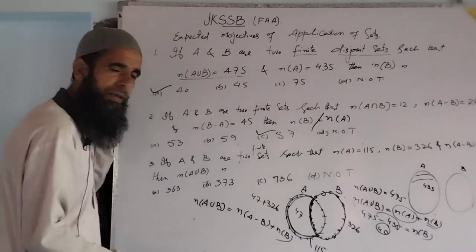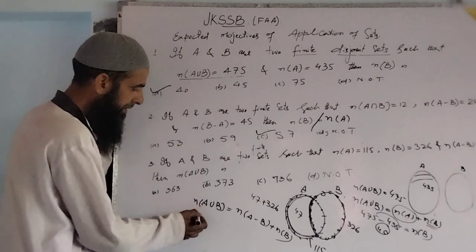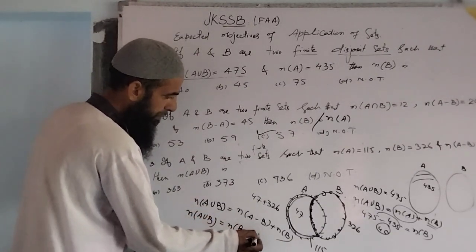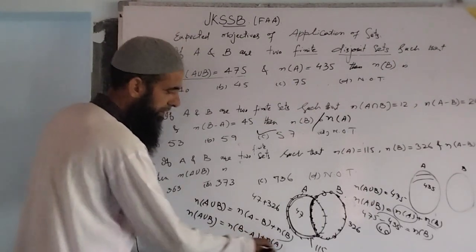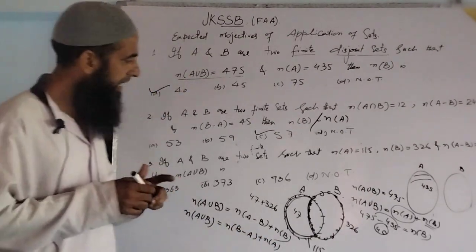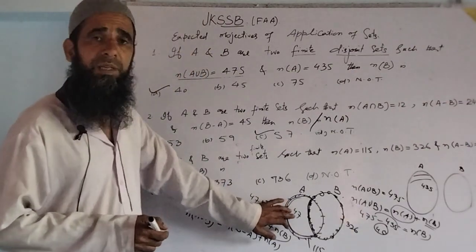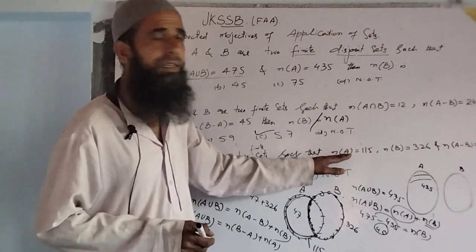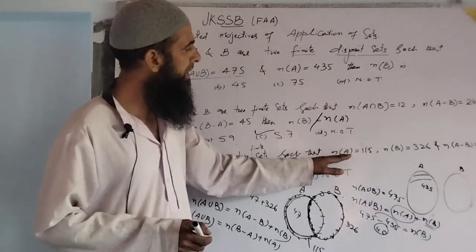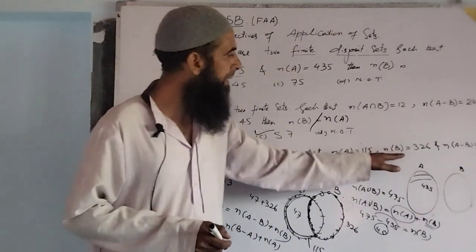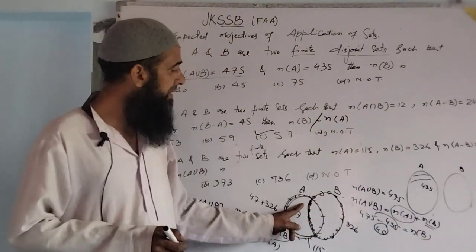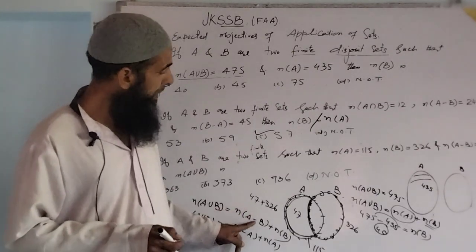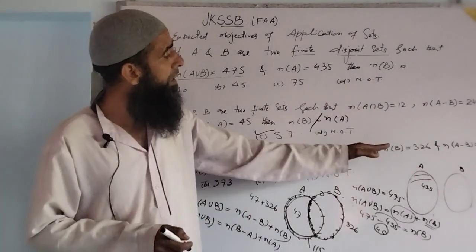Also, n(A∪B) is always equal to n(B minus A) plus n(A). We have A minus B given here. So: n(A∪B) = n(A minus B) + n(B). Number of elements in A minus B is 47, and number of elements in B is 326.